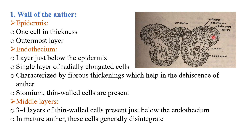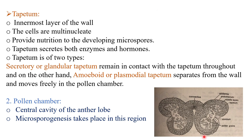Next to the middle layer is the tapetum. The cells of the tapetum are multi-nucleated and provide nutrition to the developing microspores. Tapetum secretes both enzymes and hormones and is of two types: secretory or glandular tapetum, which remains in contact with the wall throughout; and amoeboid or plasmodial tapetum, which separates from the wall and moves freely in the pollen chamber.